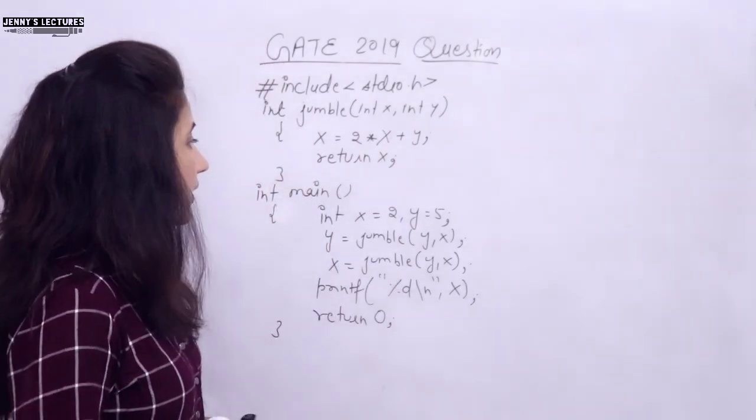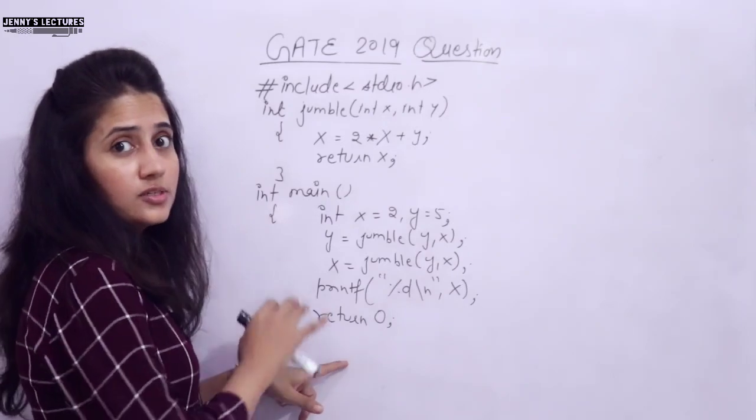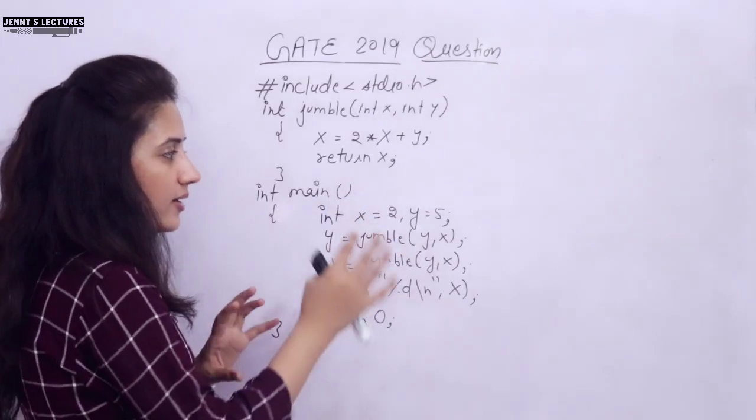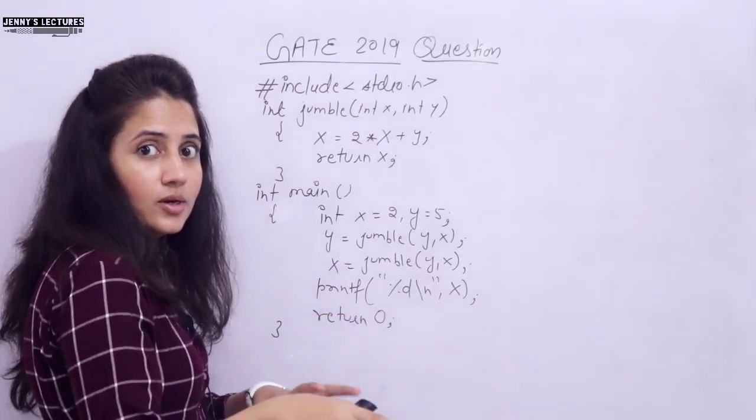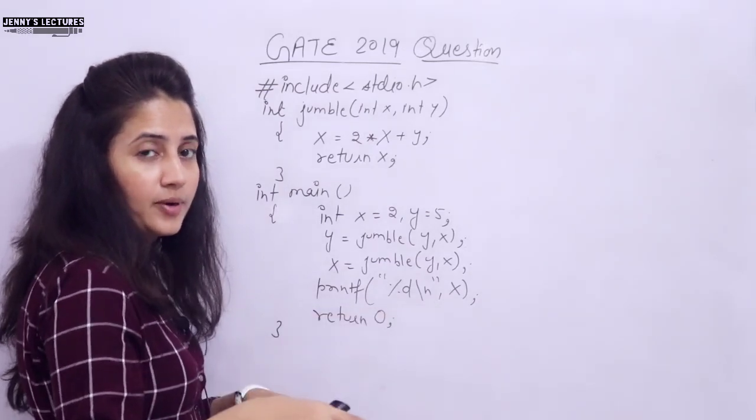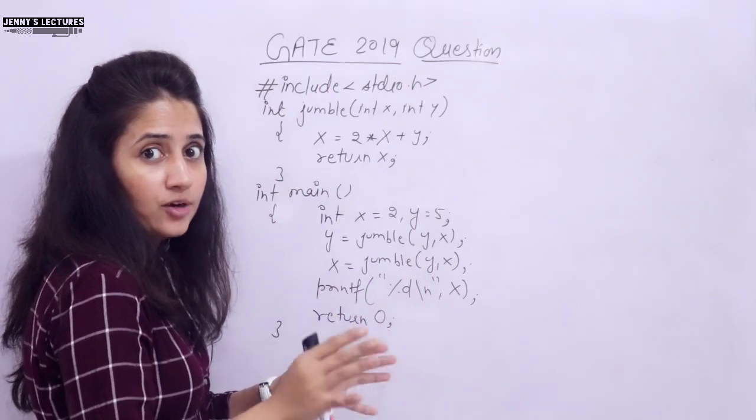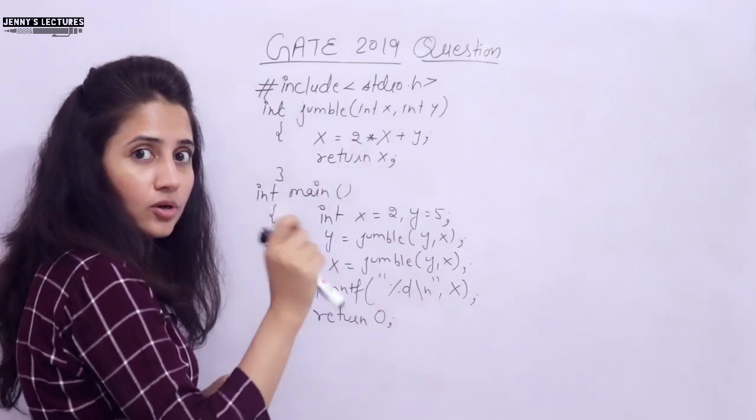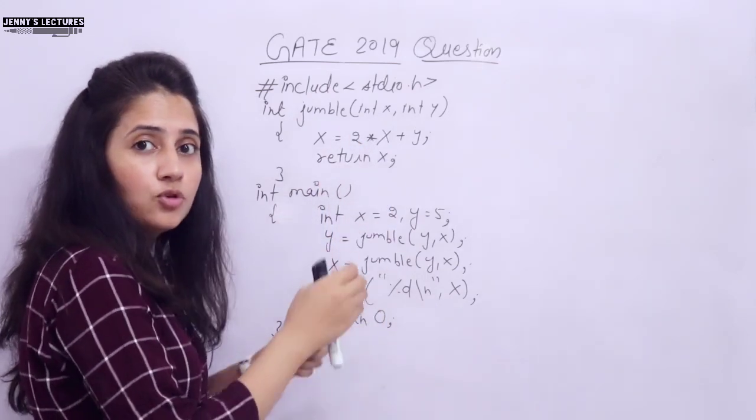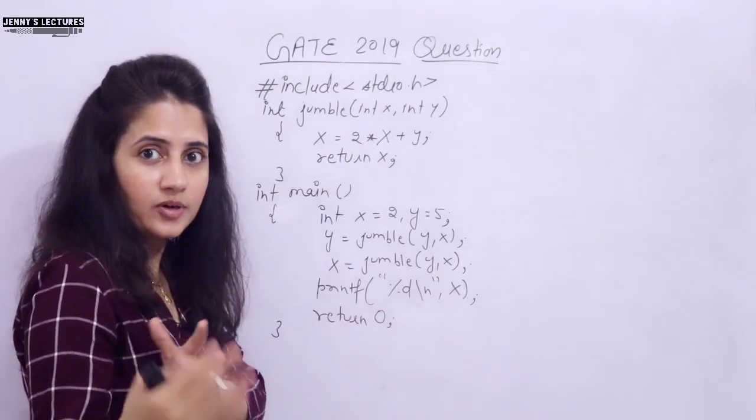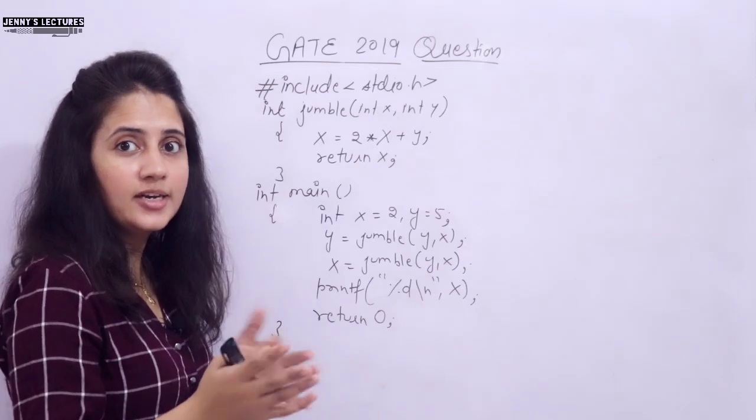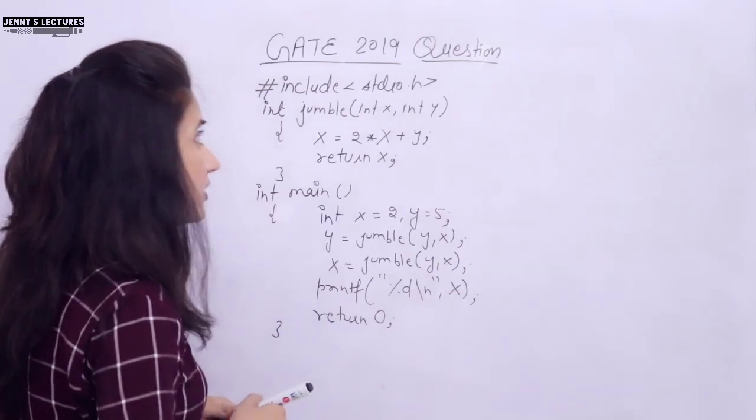Now let's discuss this question. First of all, just note down this question. It's not like just note down and run this on your laptop and see what output you are getting. No, that is not the correct way. Dry run this with your pen and paper. See what output you are getting and then check on your laptop. Run this on your laptop and check if you are getting same answer or not.